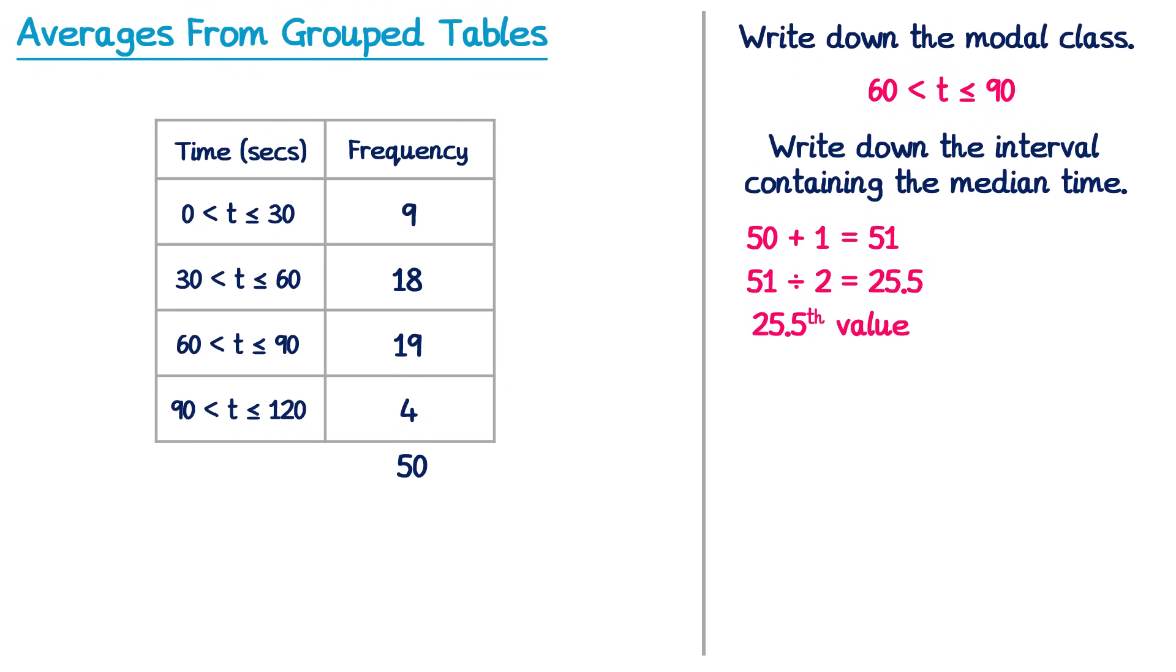Now you might find that a strange value to look for, especially because you can't have a 25.5th person. But in most questions it's unlikely to make much difference, and you could think of it as finding the point that's halfway in between the 25th person and the 26th person, if you find that easier. So let's look down the frequency column and try and find where the 25.5th person would be.